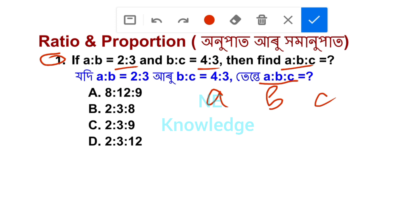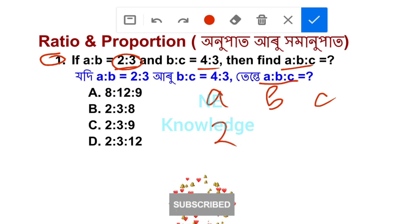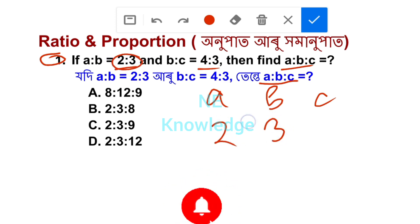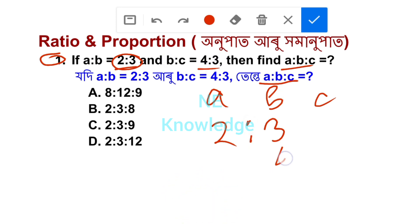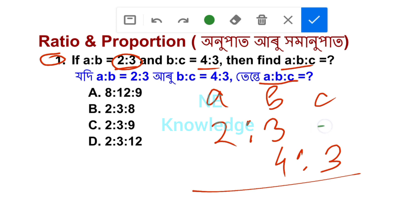A is 2 and B is 3. Next, B:C is 3:4, so B is 3 and C is 4. Then A is 2, B is 4.